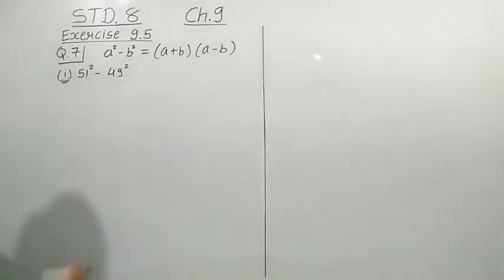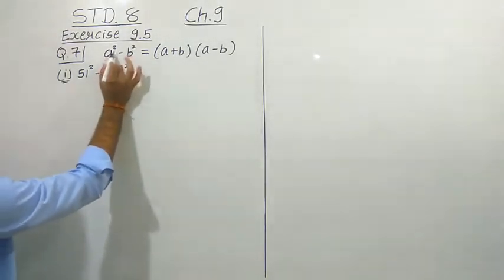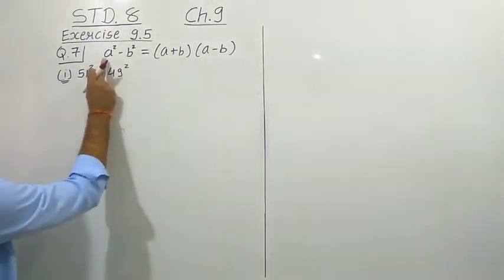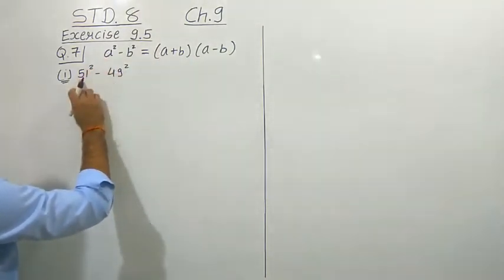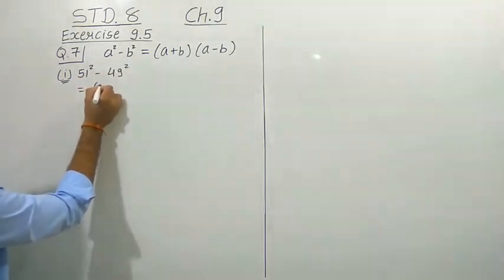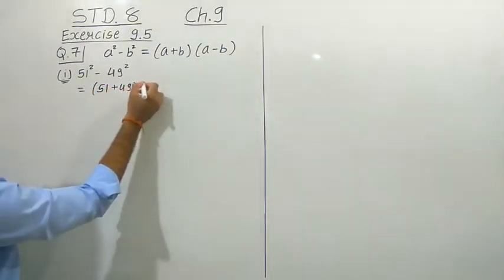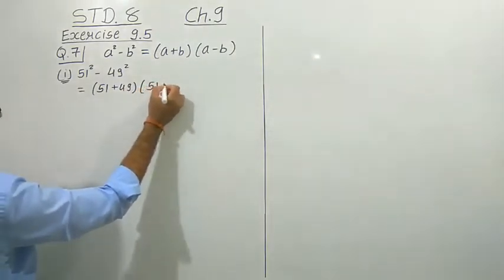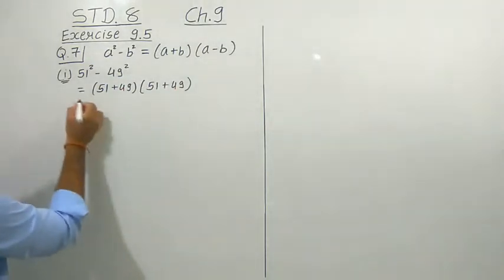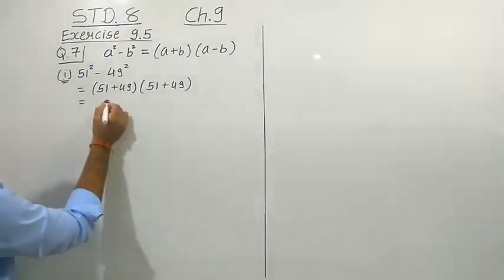The first subquestion is 51 squared minus 49 squared. We can see that a squared and b squared is there, and here also 51 squared and 49 squared. So we can replace a with 51 and b with 49. We write it as 51 plus 49 in one bracket and 51 minus 49 in another bracket. The addition gives us 100.